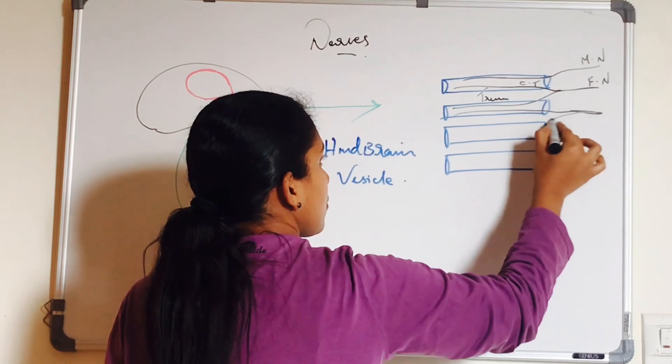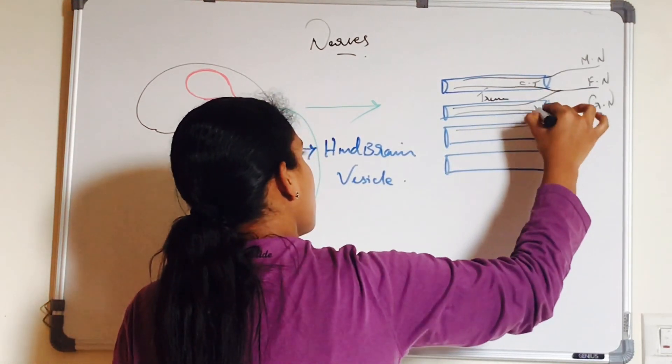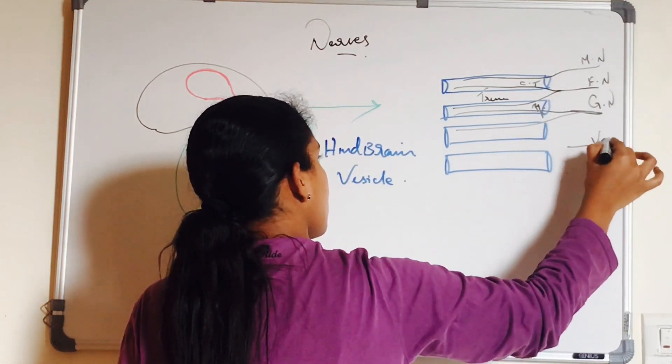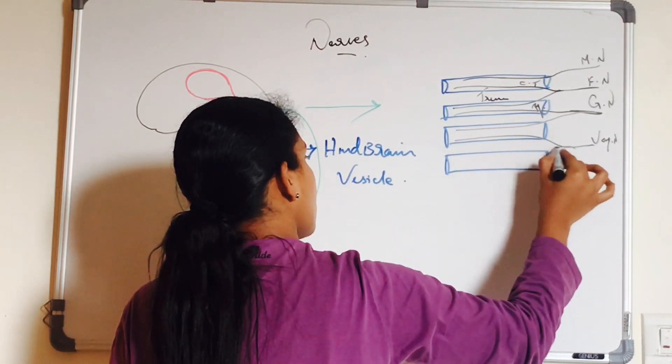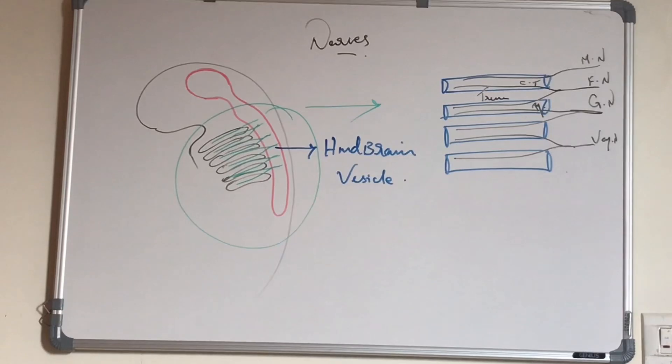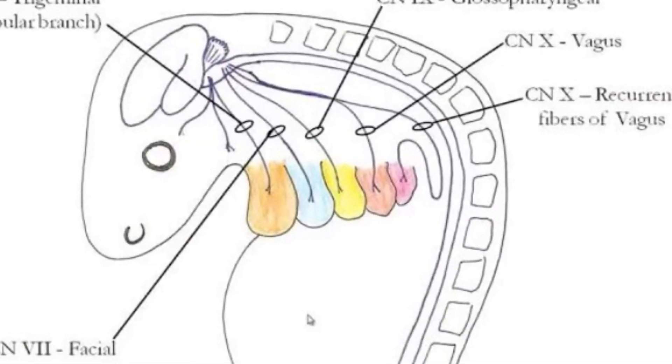Similarly, third nerve glossopharyngeal, the pre-trematic branch will be tympanic branch. The proper nerve comes to the third arch. Auricular branch of the vagus moves towards the previous arch. Here you can see the nerves coming from the hindbrain vesicles.